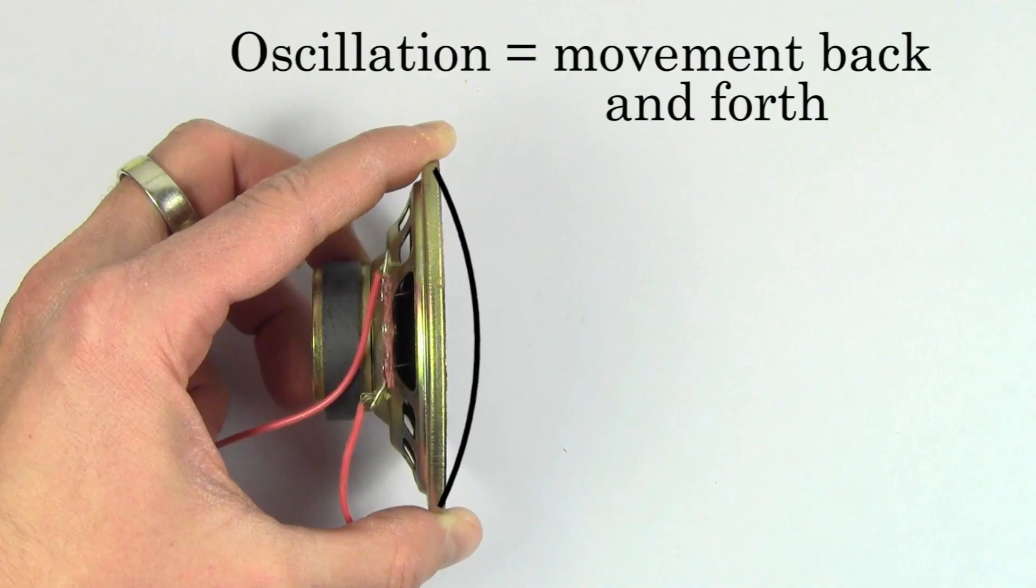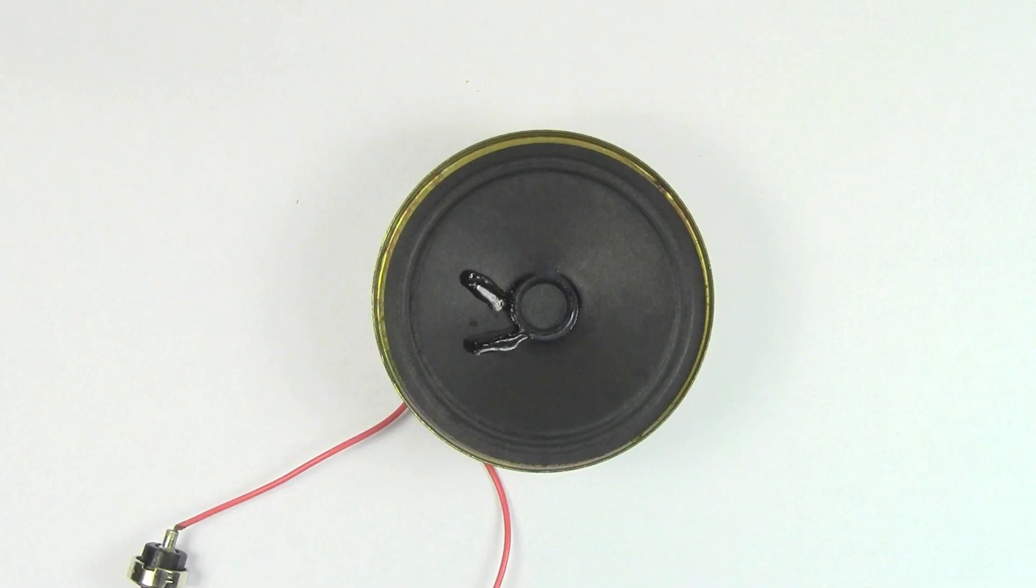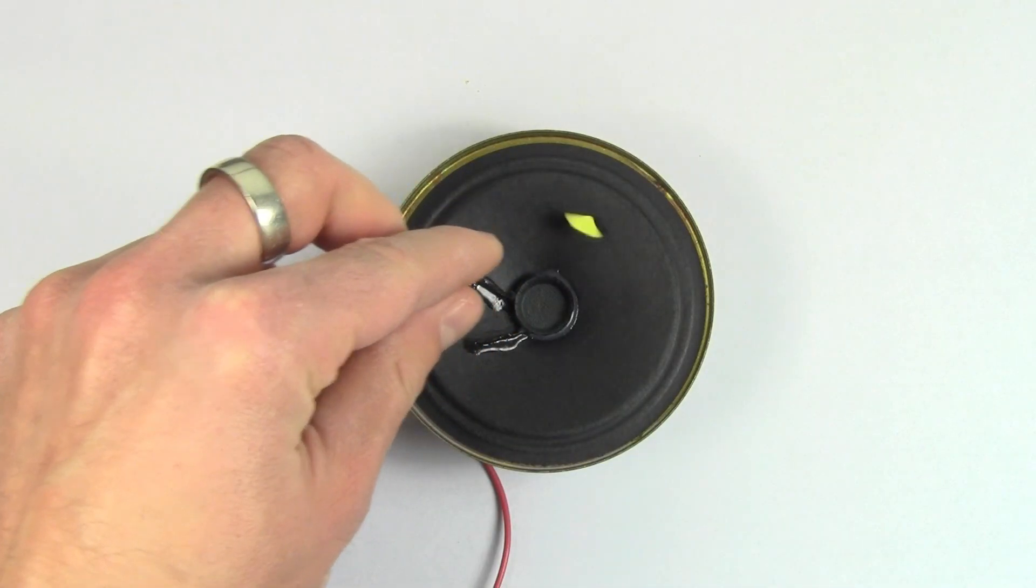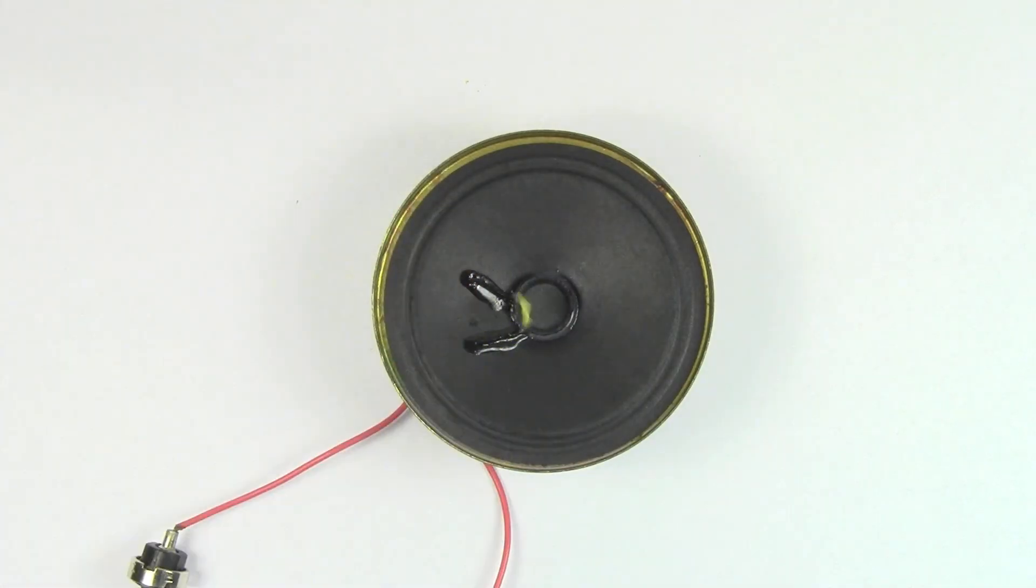Scientists often use the word oscillation to refer to the back and forth motion of an object. This speaker is oscillating too fast for the human eye to see, but if I put a piece of paper on the speaker, we see that because the diaphragm is oscillating, it's bumping into this piece of paper and causing it to dance.